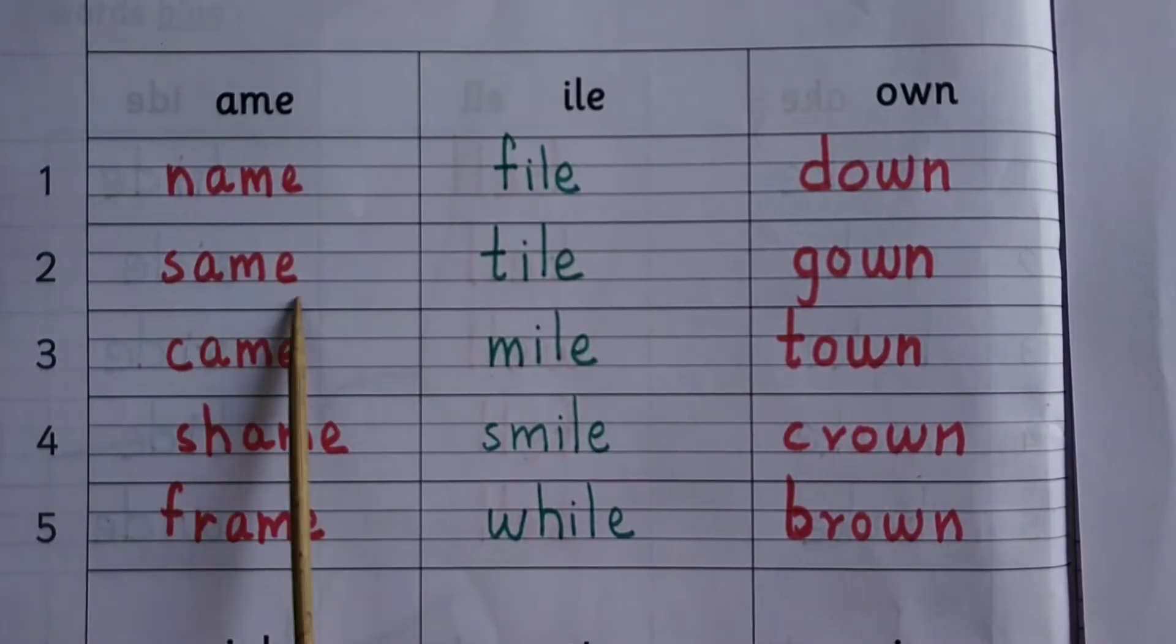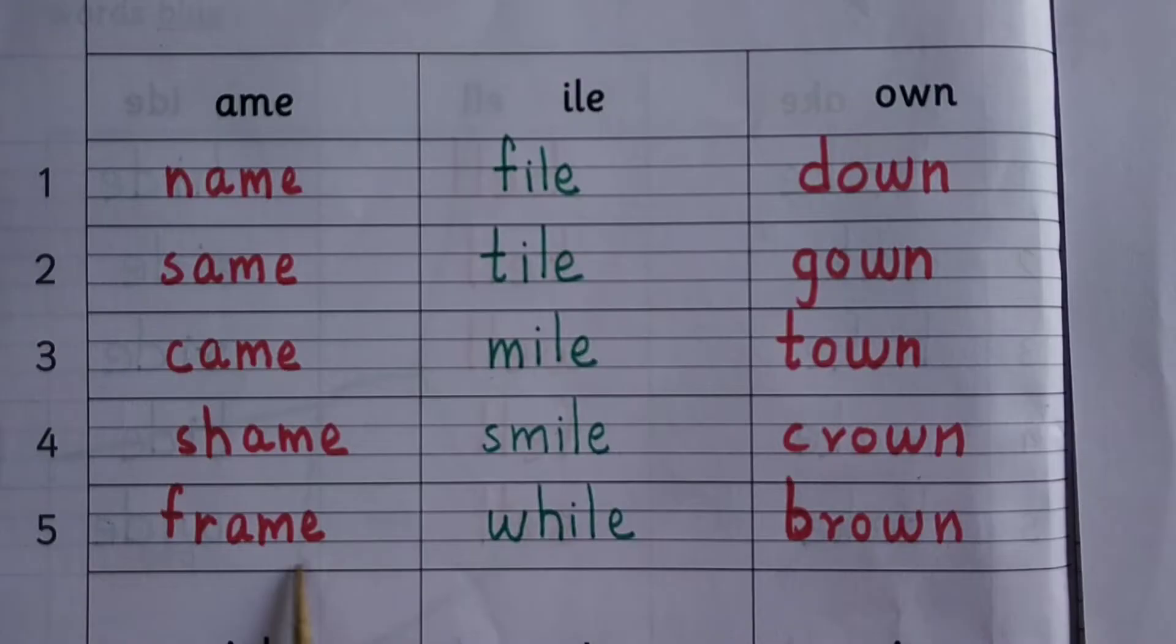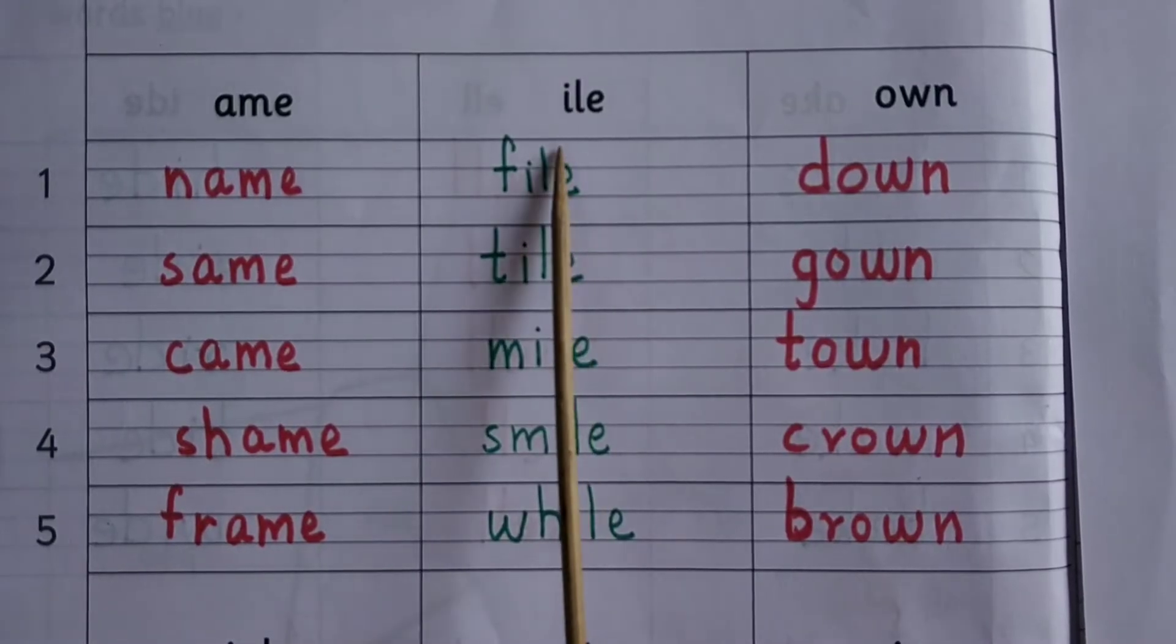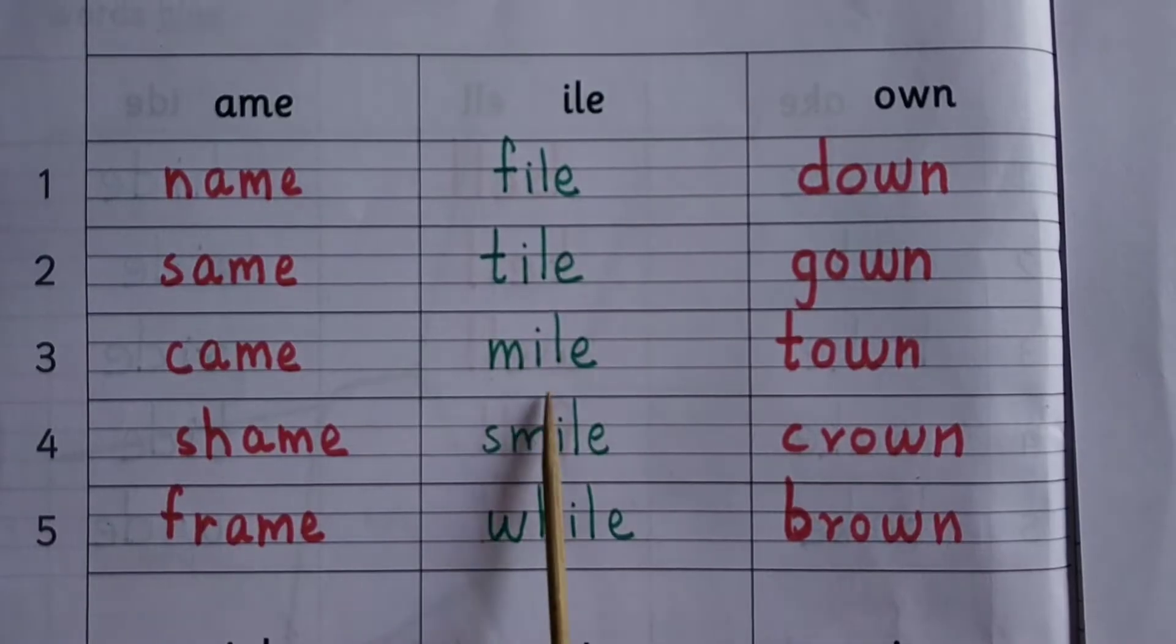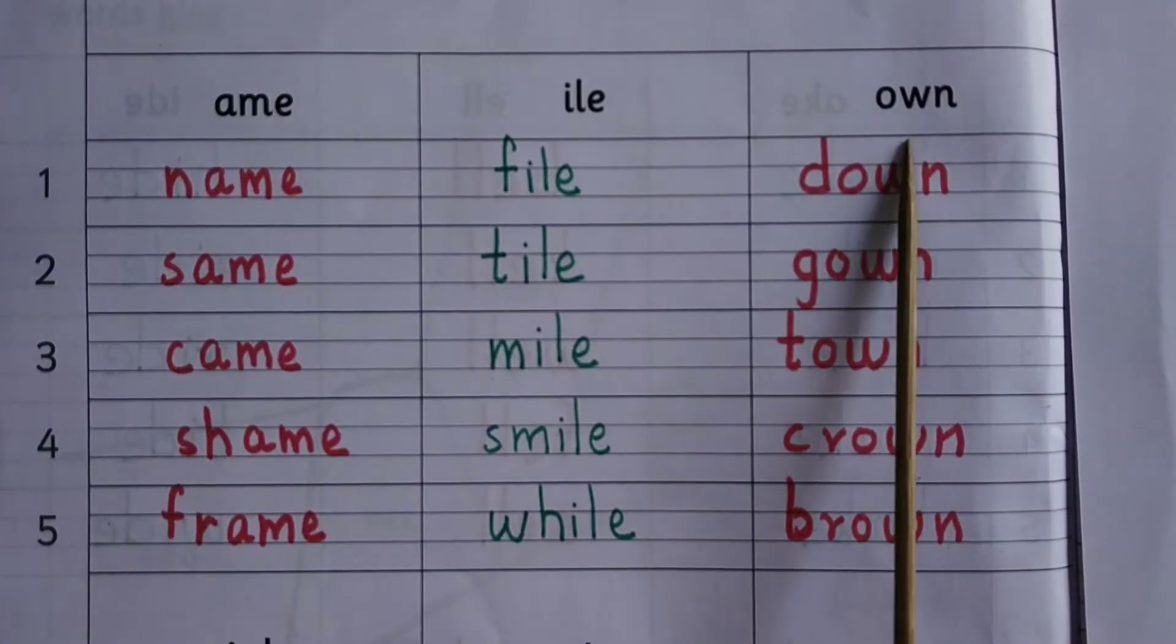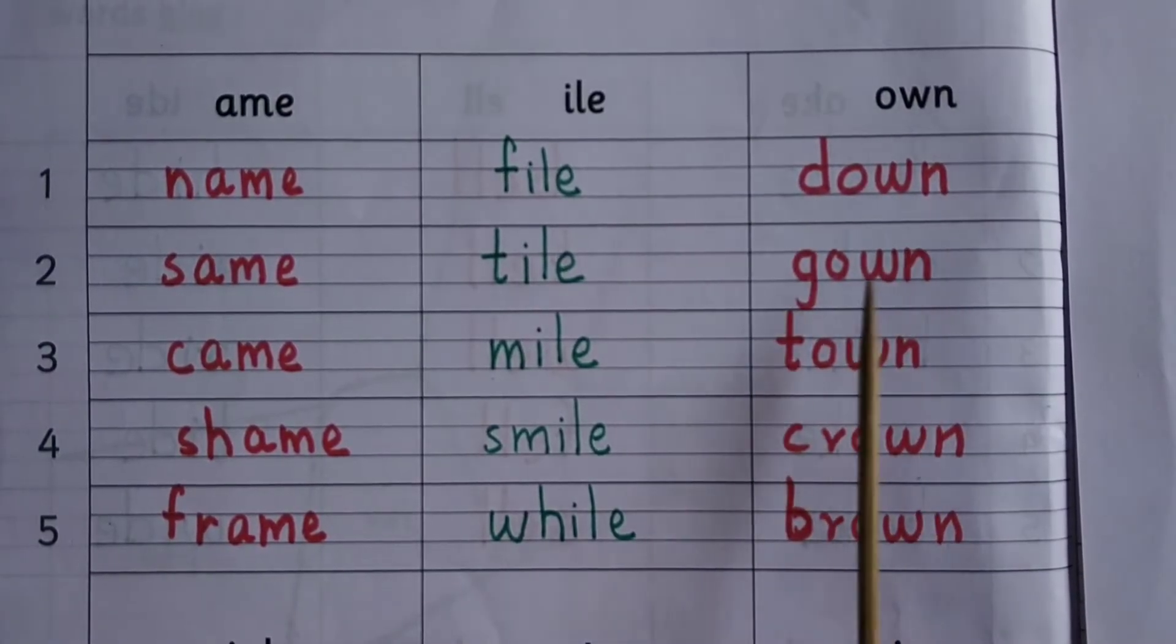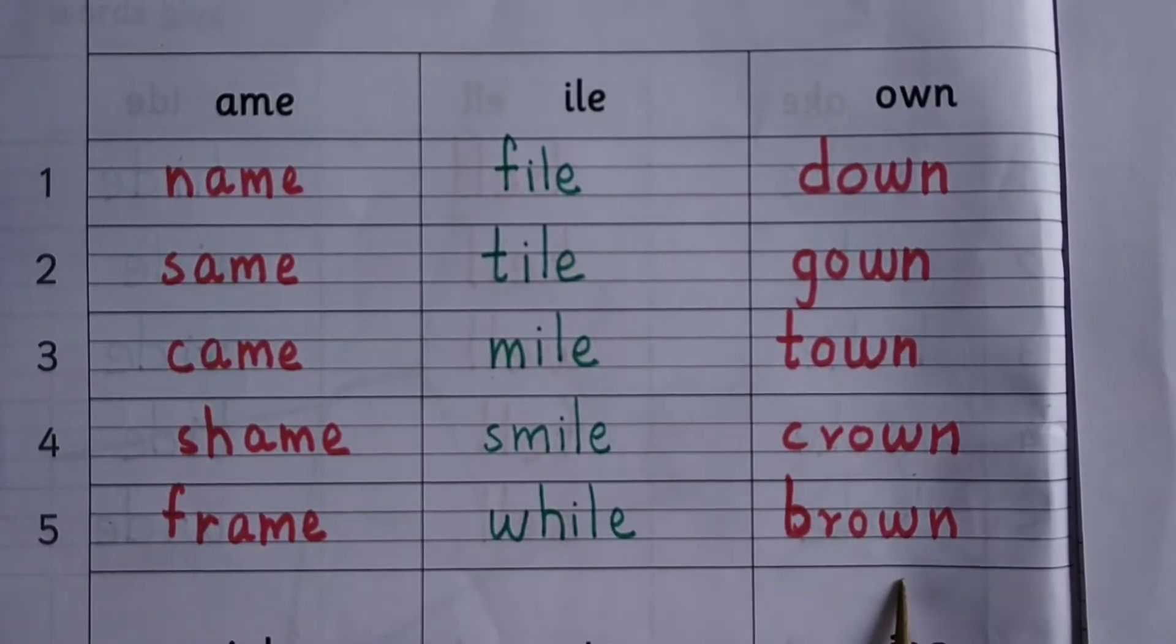Name, same, came, shame, frame. I-L-E: file, tile, mile, smile, while. O-W-N: down, gown, town, crown, brown.